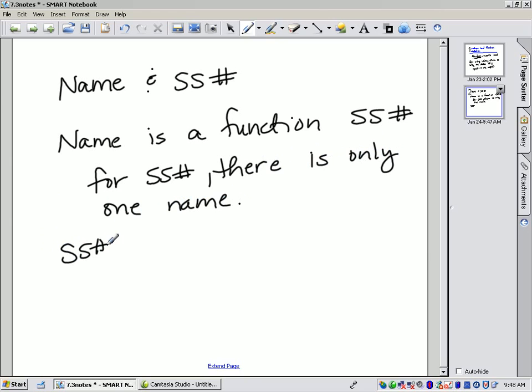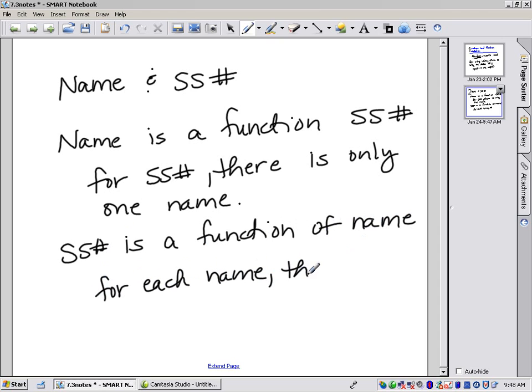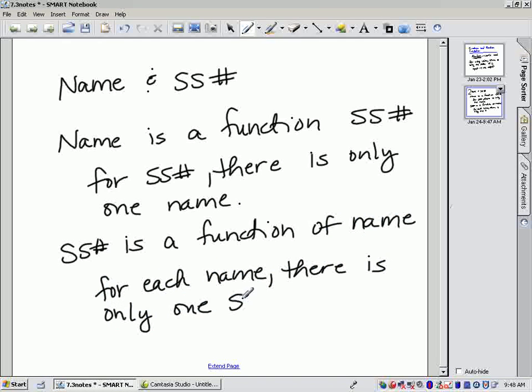Now that works the other way around as well. Social security number is also a function of name. If I didn't know your social security number, I could search on your name and I would get your individual social security number. So that means in that case that for each name, there is only one social security number. This works for many things. You can think of cell phone numbers, husband and wife. Hopefully, one is a function of the other. There's only one person that they can be married to, at least in most states.